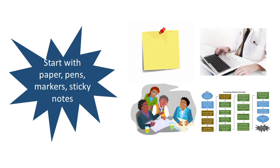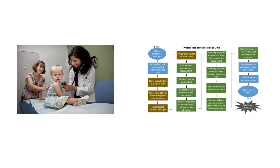Sometimes it is best to start with paper, pen, and sticky notes. Computer software is available for drawing flowcharts and is quite handy for drawing a neat final diagram, but for the messy initial stages, using pen and paper is just fine. Now let us look at an example of a process flowchart drawn as part of an effort to improve process turnaround time at a pediatric outpatient clinic. A high-level map of a typical patient's clinic visit is drawn here. We decided to color code our steps by whether they involved the front office, the nurse, or the physician.